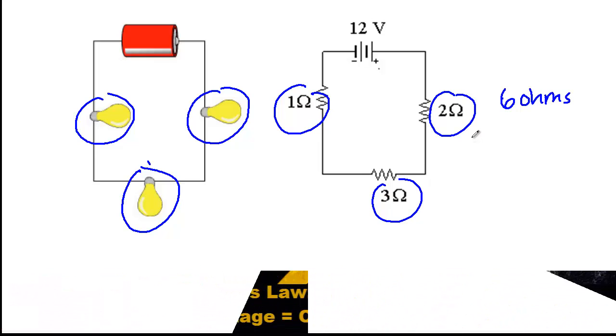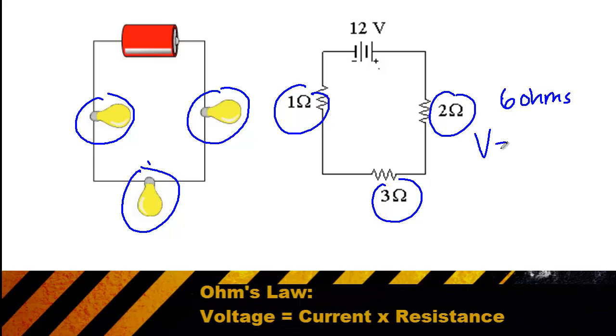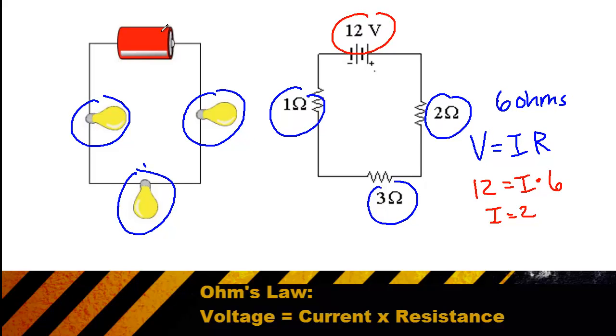Next we used Ohm's law, which is voltage is equal to current times resistance. We know the total voltage, that's 12. So 12 is equal to a current that we don't know times a total resistance of 6, or the current is equal to 2, or 2 amps. So the resistance of 6 ohms and the current of 2 amps, that applies to the circuit as a whole.